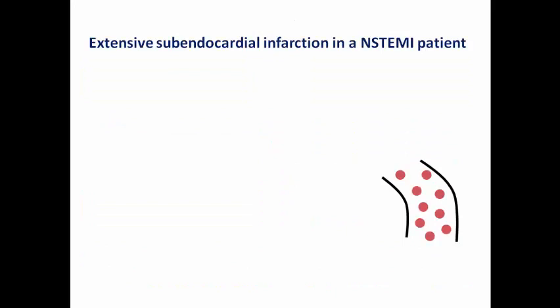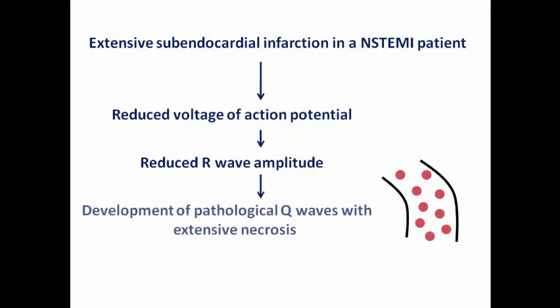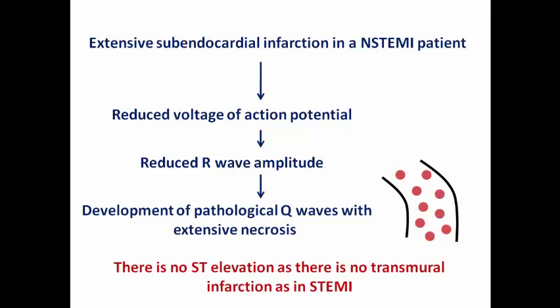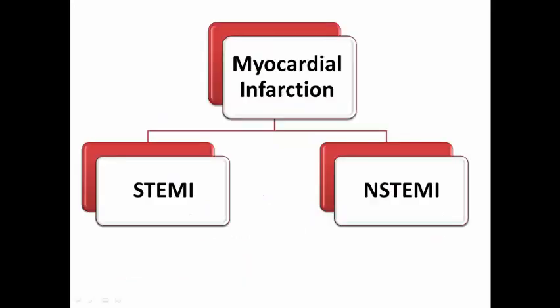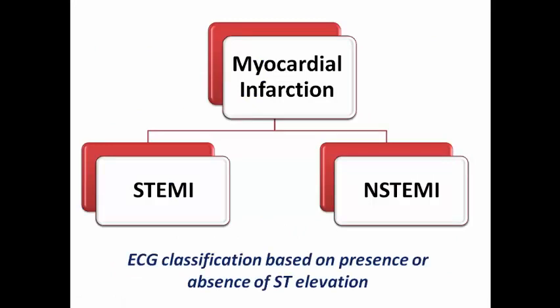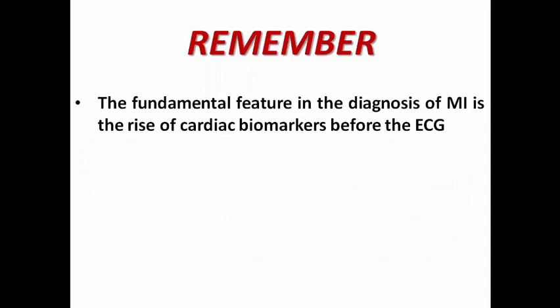Sometimes when a patient with non-STEMI develops extensive subendocardial infarction, there is reduced voltage of the action potential, reflected as reduced R wave amplitude and development of pathological Q waves due to extensive necrosis. In this case the patient does not have ST elevation because there is no transmural infarction — it is subendocardial — but because it is extensive it results in pathological Q waves without ST elevation. That is why MI is classified into STEMI versus non-STEMI based on the presence or absence of ST elevation, and the fundamental feature in diagnosing MI is the rise of cardiac biomarkers before any ECG changes occur.